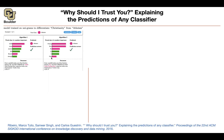The second algorithm seems to be focusing on words that don't seem relevant to either Christianity or atheism, and the opposite is true for the first algorithm. So by looking at the words that an algorithm is focusing on, we can build more trust in the prediction of that algorithm.